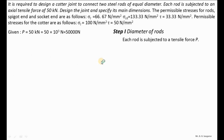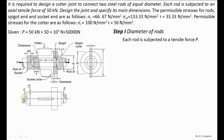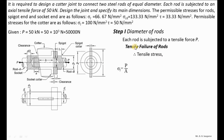We calculate the diameter d of the rod connected to both socket and spigot. Considering tensile failure, the induced tensile stress sigma_T = P/A, where the cross-sectional area is (π/4)d². Rearranging: d = √(4P / (π × sigma_T)). Using P = 50,000 N and sigma_T = 66.67 N/mm², diameter d = 30.90 mm, rounded to 32 mm.